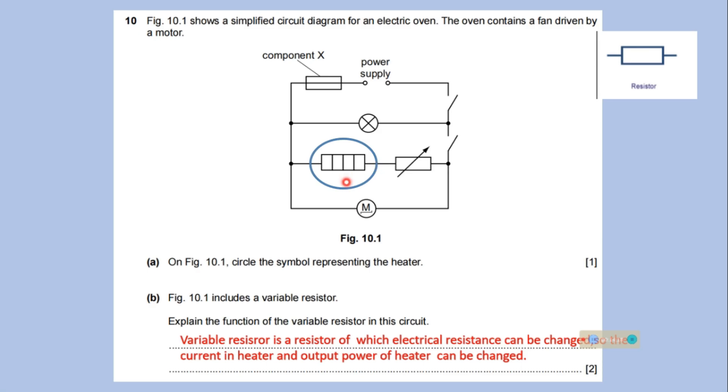This figure includes a variable resistor. Explain the function of the variable resistor in this circuit. Variable resistor, shown here, is a resistor of which electrical resistance can be changed. So the current in heater and output power of heater can be changed.